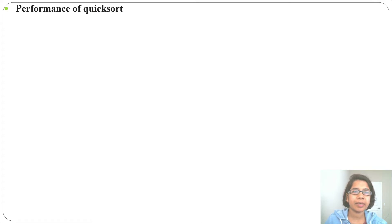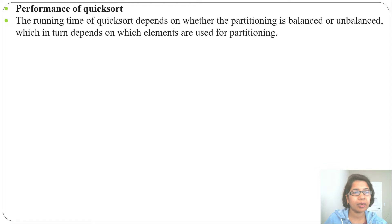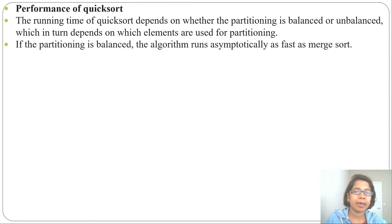In the previous lecture I discussed QuickSort. Let's discuss the performance of QuickSort. The performance of QuickSort depends on the input. The running time depends on whether the partitioning is balanced or unbalanced, which in turn depends on which elements are used for partitioning — that is, what the input looks like. If the partitioning is balanced, that is our best case; if it is unbalanced, that is our worst case.